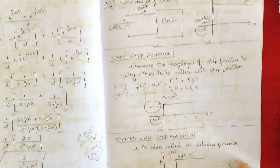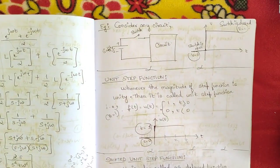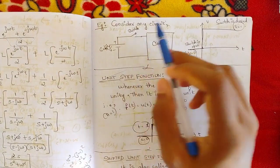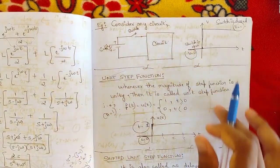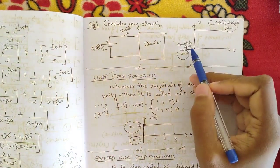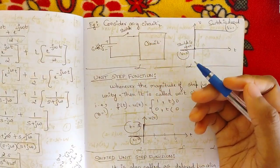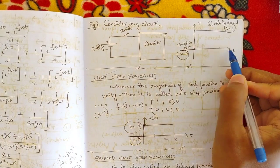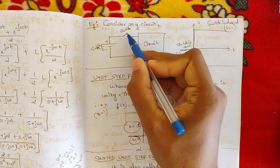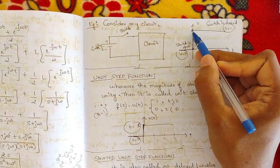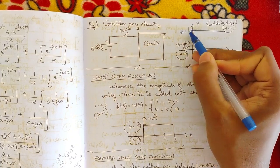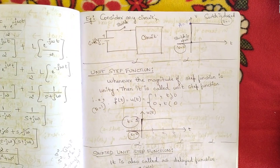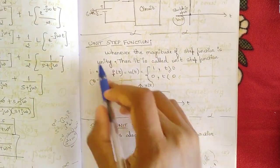Consider a circuit with a supply and a switch connected to a circuit. When the switch is open, no current flows, so the value is zero — this corresponds to all negative time values. When the switch is closed, the value becomes equal to A, which equals one. This illustrates the unit step function.